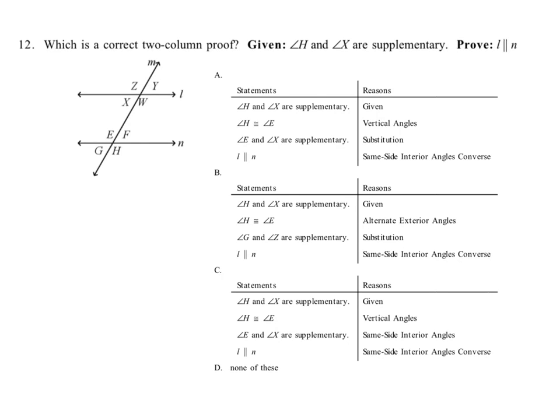Which is the correct two-column proof? It's given to us that angle H and angle X are supplementary. They're also saying that angle H is congruent to angle E because they're vertical angles — and that's true, they are vertical angles and they are congruent.